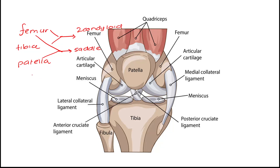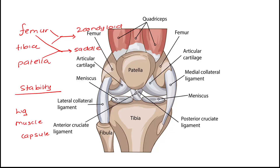In most joints we are concerned about stability. Stability is given by the presence of ligaments, muscles, as well as the capsule. In some MCQ statements you would see questions about which structures provide better significance to stability. One thing you should remember is that the muscles play an important part in comparison to the ligaments when it comes to stability, even though there are multiple ligaments present.